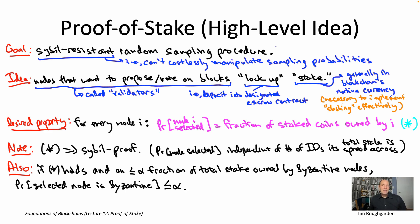But before we get to that, I do want to talk a little bit more about just the motivation for proof of stake. After all, we already have a permissionless Sybil resistant random sampling subroutine in proof of work. Why isn't that good enough? Why might we want an alternative? So we'll talk about a few of the reasons in the next video. I'll see you there.